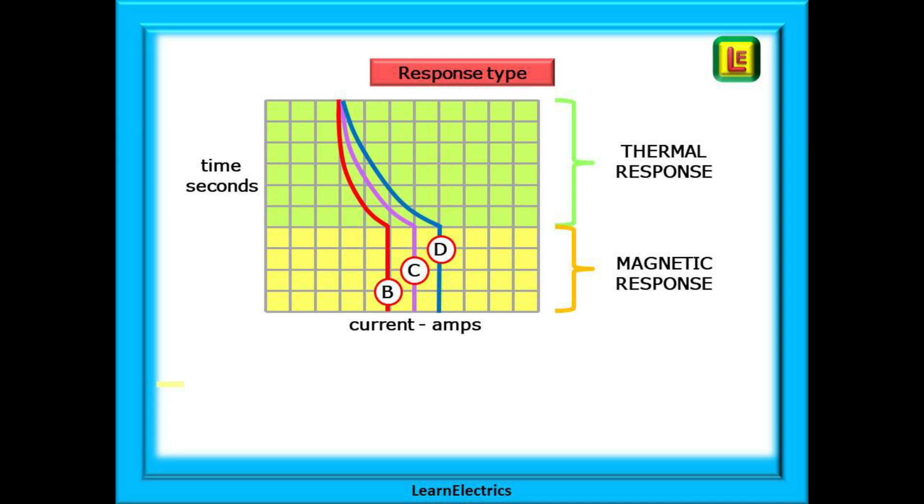Here are the three response curves as they are called for the three types. How quickly they react is shown in seconds on the left hand side and the current to make them trip is shown on the bottom from left to right. Let's look at some very simple examples to demonstrate what might happen.